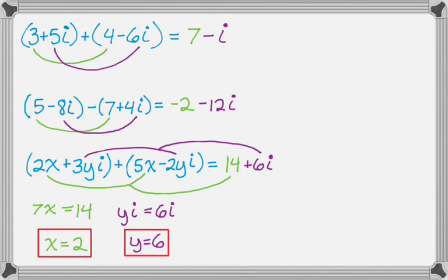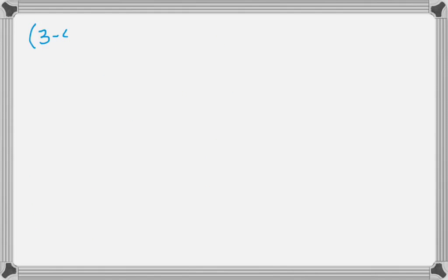The next thing we're going to do is take a look at multiplying complex numbers. Say we have 3 minus 4i multiplied by the quantity 5 plus 2i. This is a lot like multiplying binomials — actually, it's almost identical to multiplying binomials.